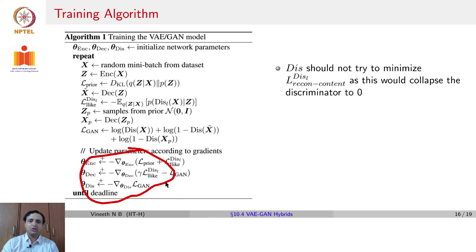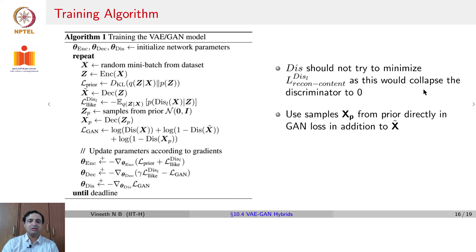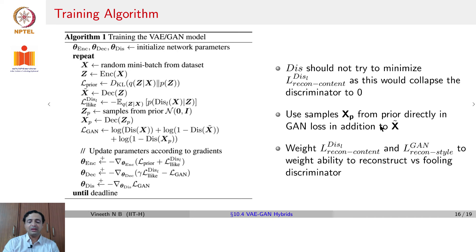Each network only uses losses relevant to it — encoder, decoder, and discriminator are updated using the corresponding gradients. The recon content and recon style losses are weighted to control the tradeoff between reconstruction quality and fooling the discriminator.